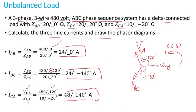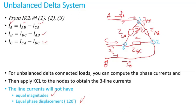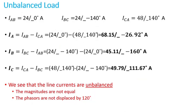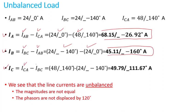Now if I apply KCL like I did here, basically just use these equations, I can calculate the line currents from the phase currents. So I_A is I_AB minus I_CA, plugging in the numbers I get 68.15 amps with an angle of negative 26.92 degrees. I_B is I_BC minus I_AB, I get 45.11 amps with an angle of negative 160 degrees. I_C is I_CA minus I_BC, I get 49.79 amps with an angle of 111.67 degrees.